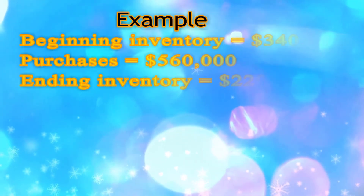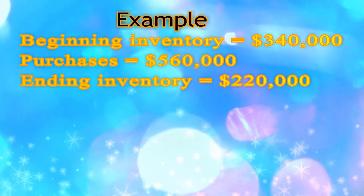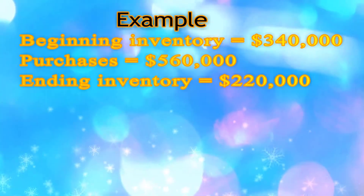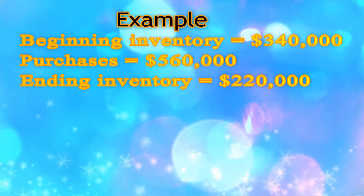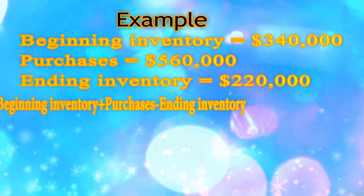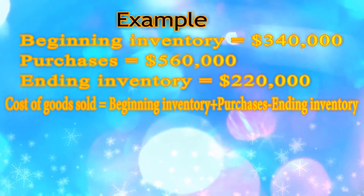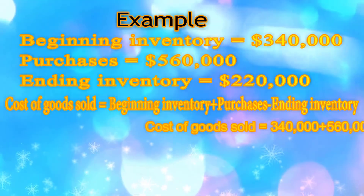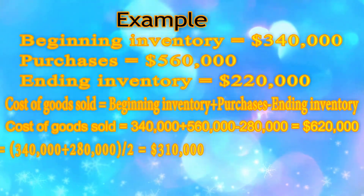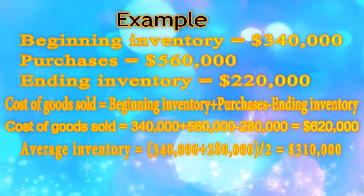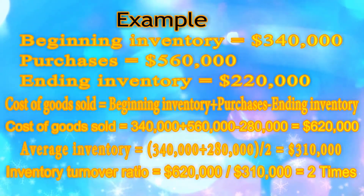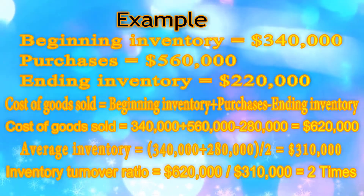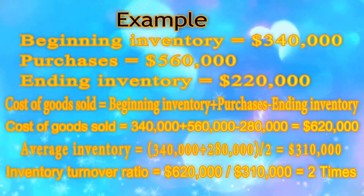Let's do an example to calculate the inventory turnover ratio. First of all, assume these figures for your business. You need to know your cost of goods sold and your average inventory. You can calculate COGS from your balance sheets at the start and end of the designated time period. Cost of goods sold equals beginning inventory plus net inventory purchases less ending inventory. If beginning inventory was $340,000 and there were net purchases of $560,000 and ending inventory was $220,000, then cost of goods sold will be $340,000 plus $560,000 less $220,000, making it $680,000.